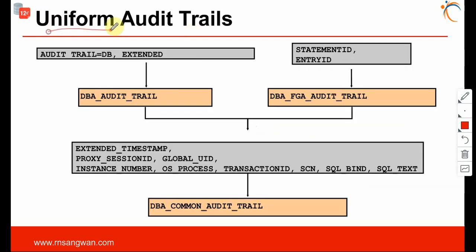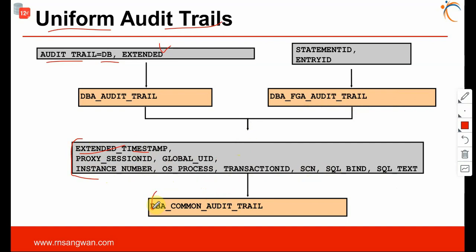Another option is setting audit_trail = DATABASE EXTENDED. With this, the DBA_AUDIT_TRAIL view captures a statement ID and entry ID whenever a user executes a statement. You can also monitor DBA_FGA_AUDIT_TRAIL and get extended values such as timestamp, proxy session ID, global user ID, instance number, operating system process, and transaction ID. Additionally, DBA_COMMON_AUDIT_TRAIL is available.